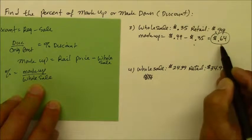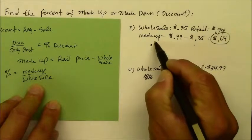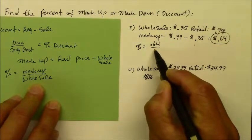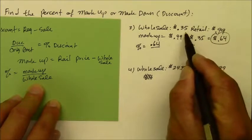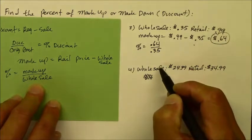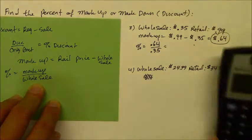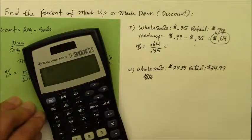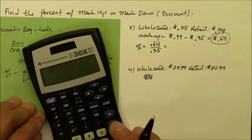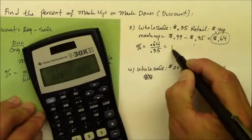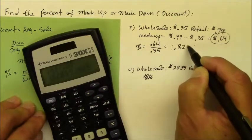Your markup was 64 cents. And to find the percent of the markup, divide that by the original amount that it cost you at 35 cents. Now, you use your calculator, because I don't want to make a mistake when it comes to money. 0.64 divided by 0.35.